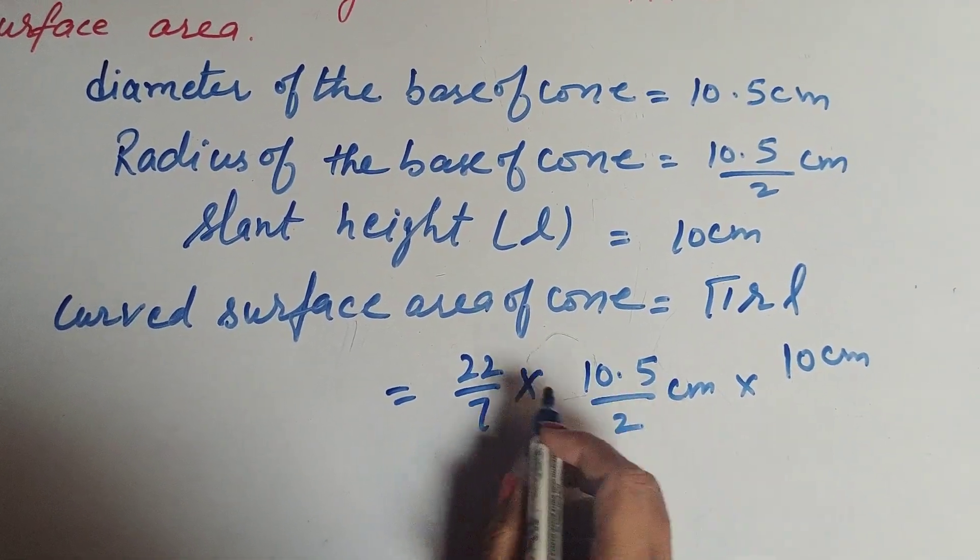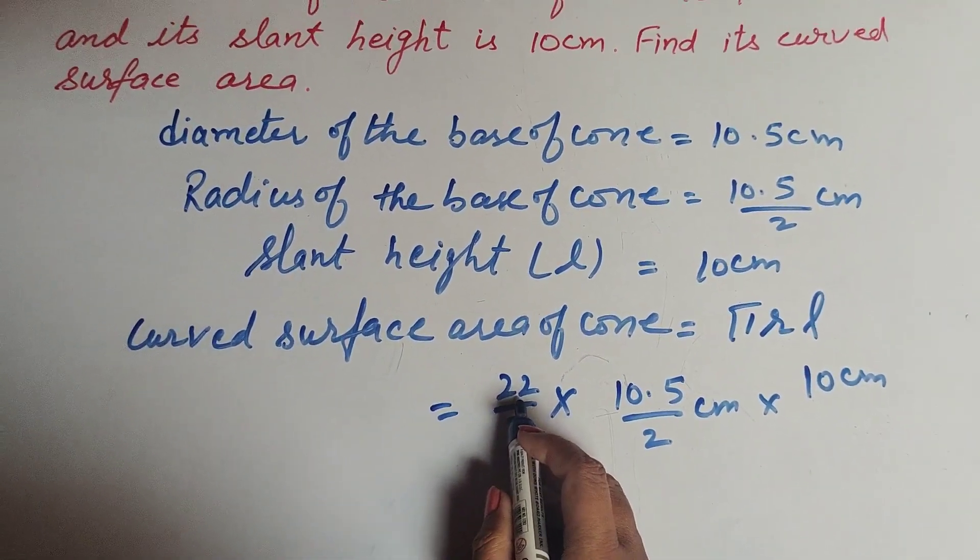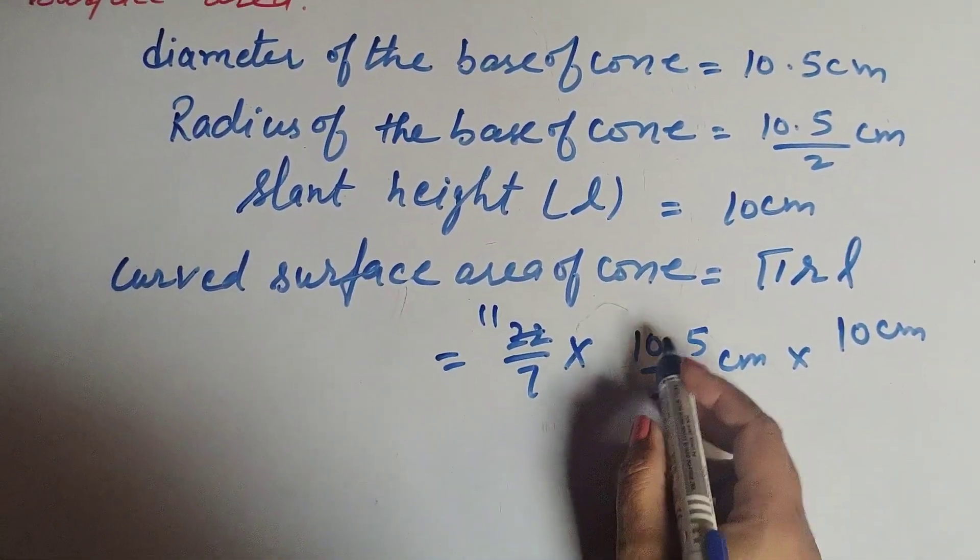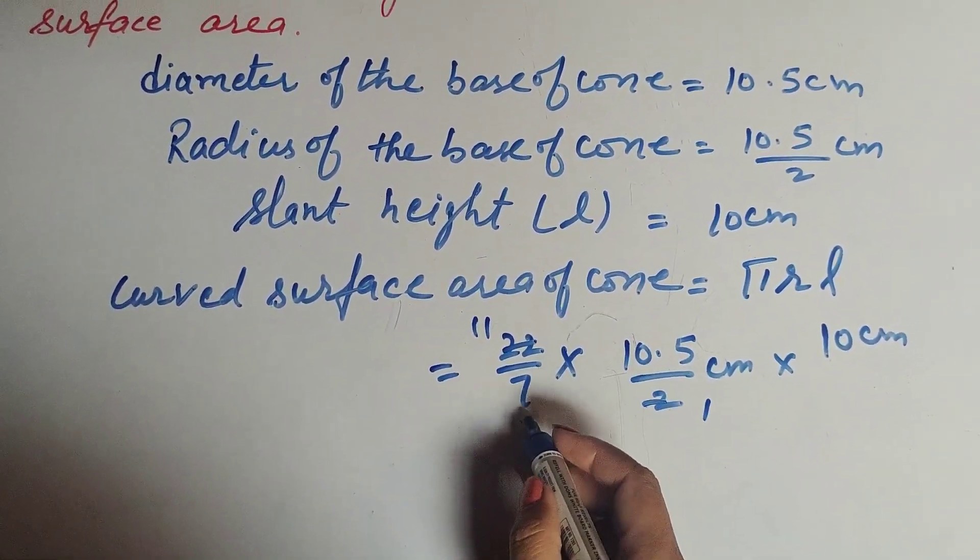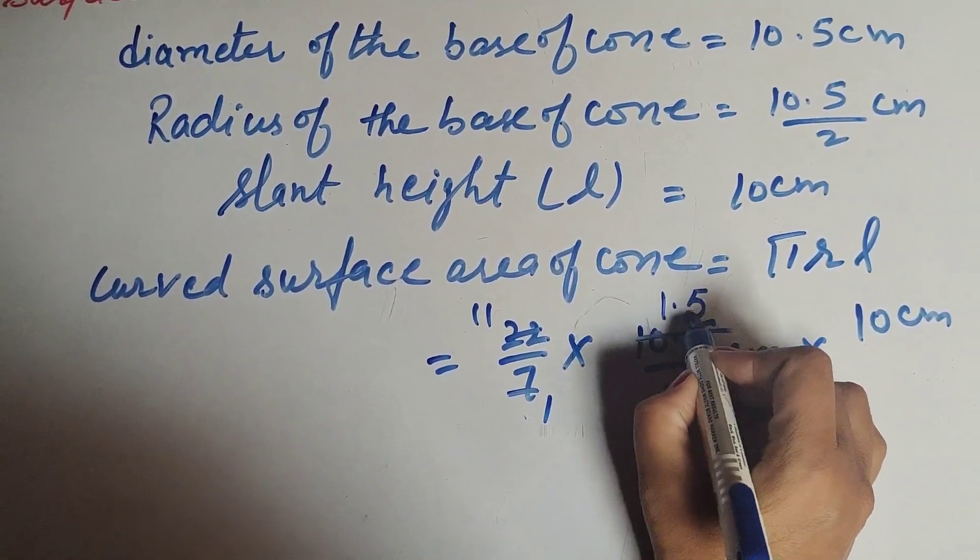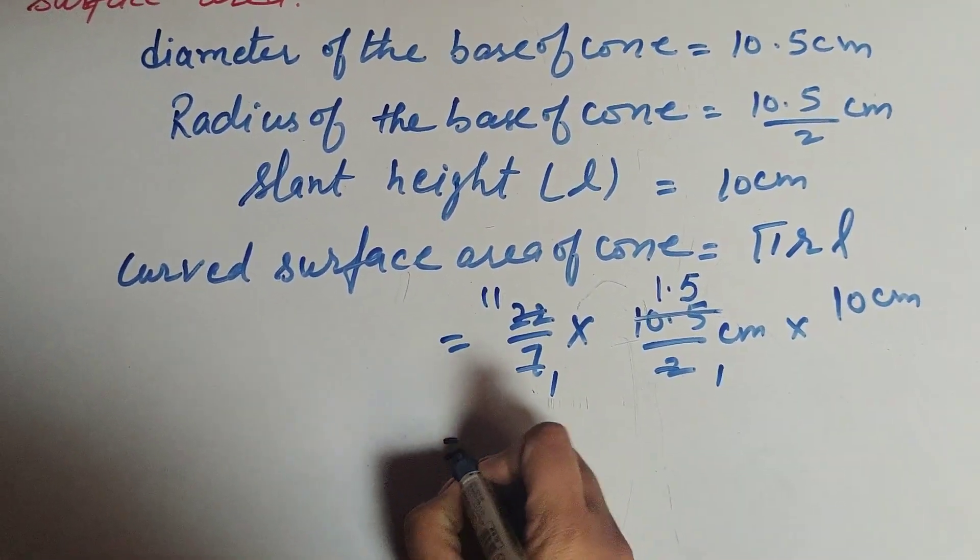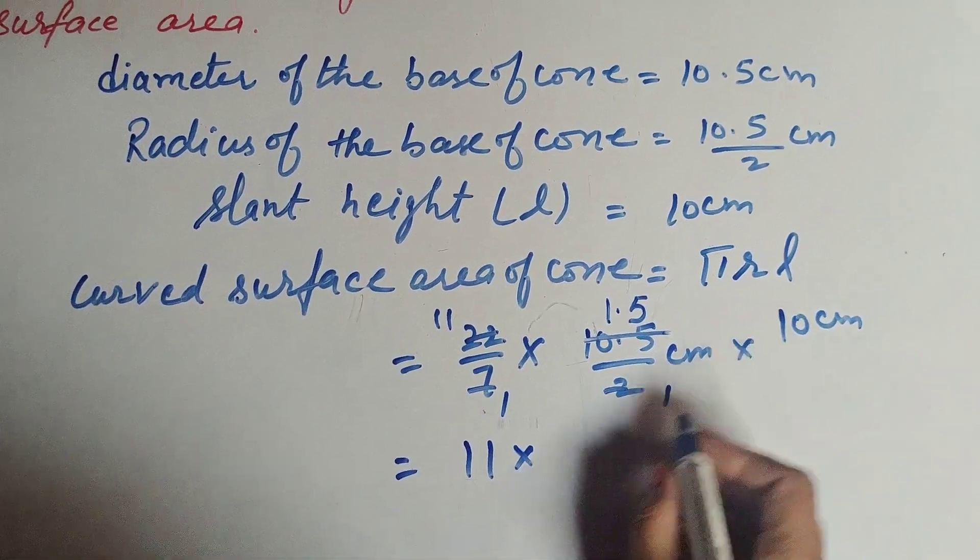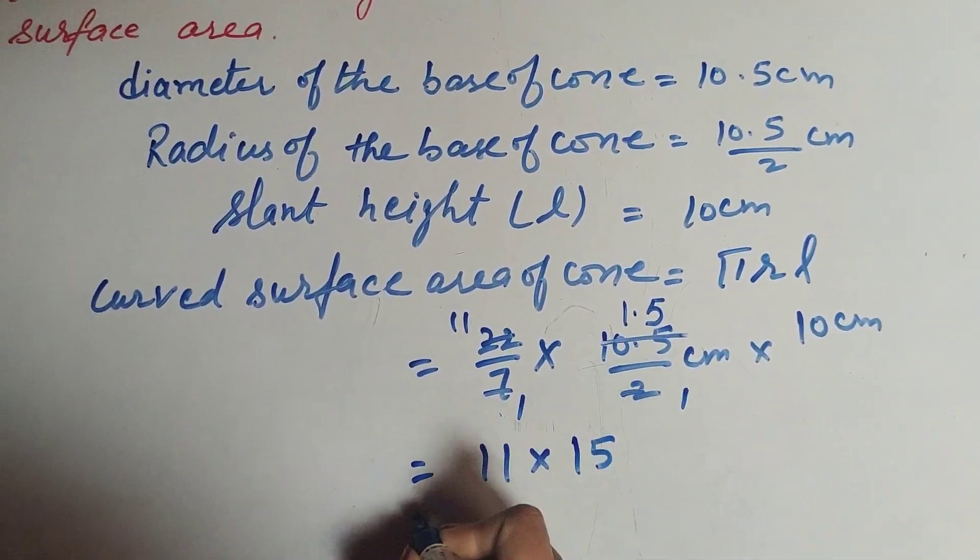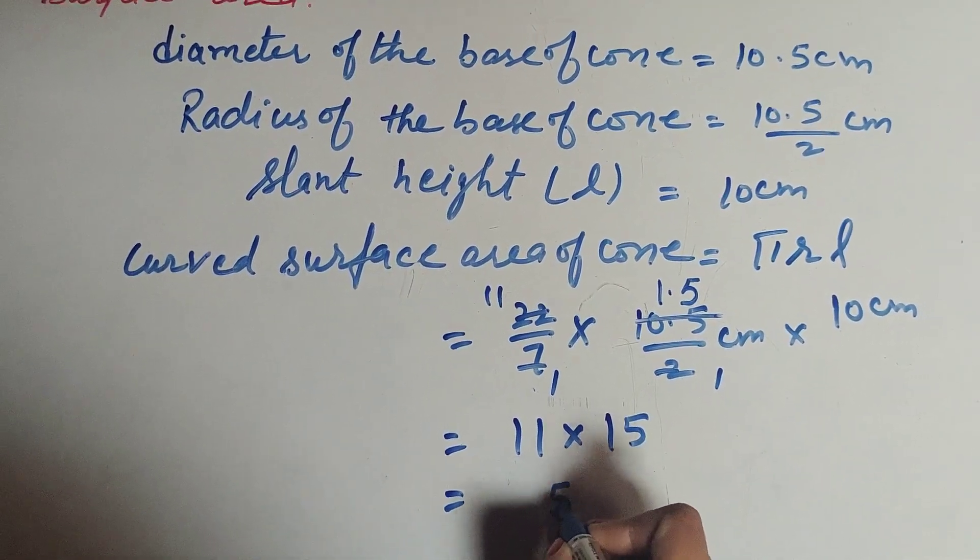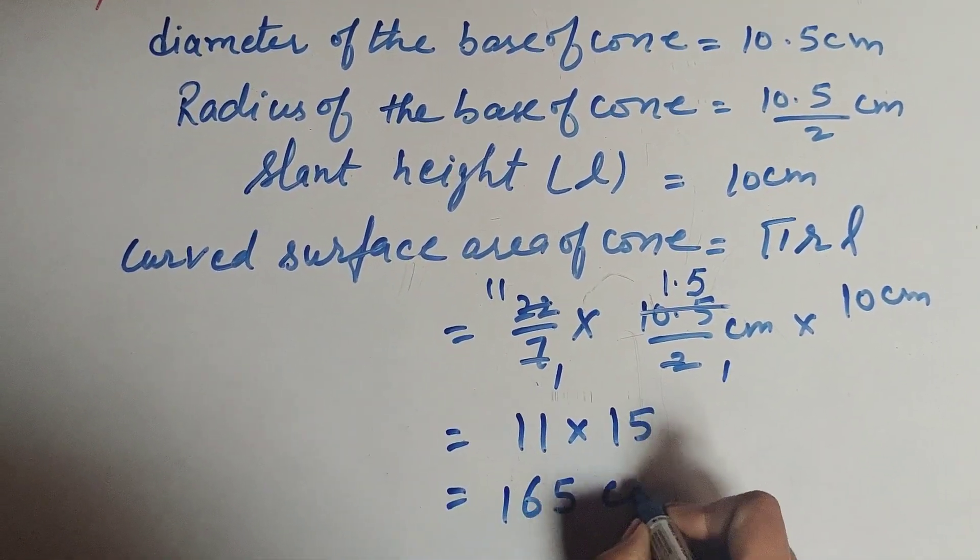2 and 22 are both divisible by 2, so we cancel them: 11. 10.5 is divisible by 7, so we cancel them: 1.5. This equals 11 times 1.5 times 10. 11 times 15 equals 165 centimeters squared. So the curved surface area of the cone is 165 centimeters squared.